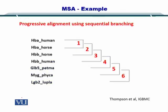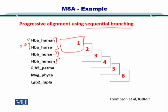Using these distances, we can create a sequential branching, wherein HBA human and HBA horse, which had a distance of just 0.13, are the closest. This is followed by HBB horse and HBB human, and the entire tree is constructed in the same manner. This is called sequential branching, and you can construct it using the progressive alignment approach.